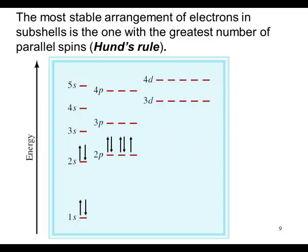Fluorine, nine electrons. 1s2, 2s2, 2p5.